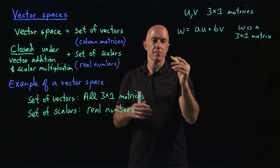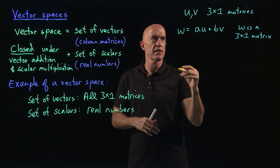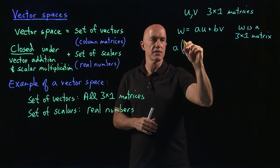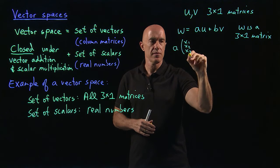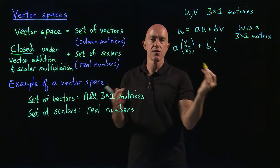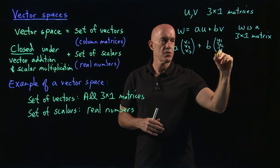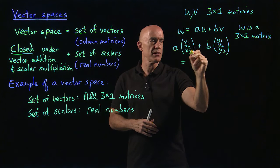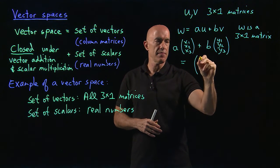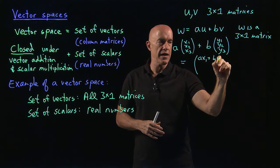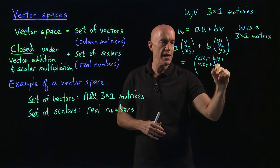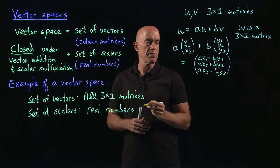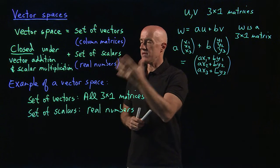We can illustrate that explicitly. That's basically saying: if we have A times the three-by-one matrix (X1, X2, X3) plus B times another three-by-one matrix (Y1, Y2, Y3), then A multiplies all the components of the first matrix and B multiplies all the components of the second. We add them to get (AX1 + BY1, AX2 + BY2, AX3 + BY3). Is this a three-by-one matrix? Yes, it is. So this is a vector space.